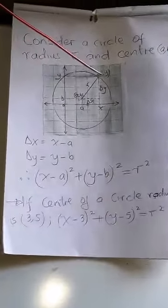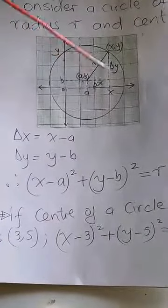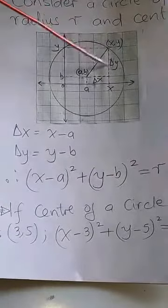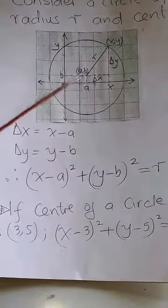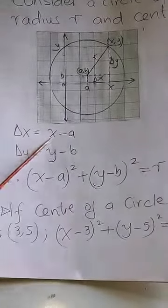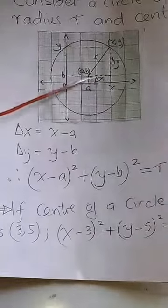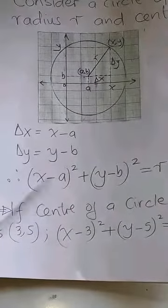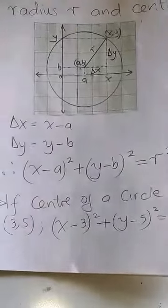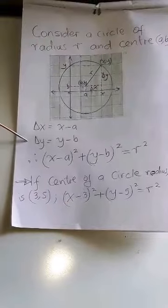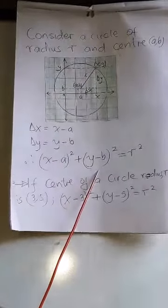This circle passes through a point (x, y). The x displacement Δx will be x minus a, and the y displacement Δy will be y minus b. Applying the Pythagorean theorem: Δx² + Δy² = r², giving us (x - a)² + (y - b)² = r².